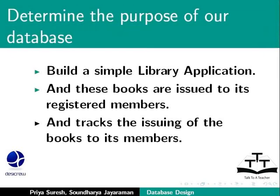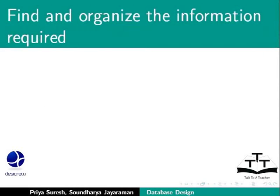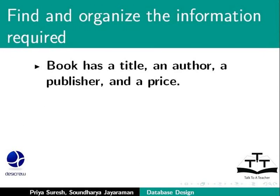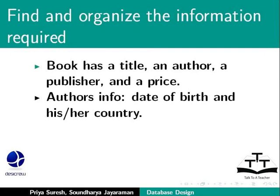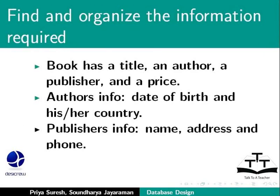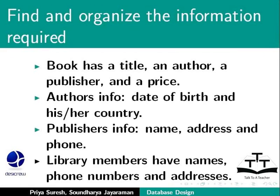Our next step is to find and organize the required information. Here is where we gather all of the types of information we want to record in the database. Now that we know the purpose of the library application, let us identify the items. There are books. A book has a title, an author, a publisher, and a price. We can also store the author's information, such as date of birth and country. We can also store the publisher's name, address, and phone. Also, there are the library members who have names, phone numbers, and addresses.